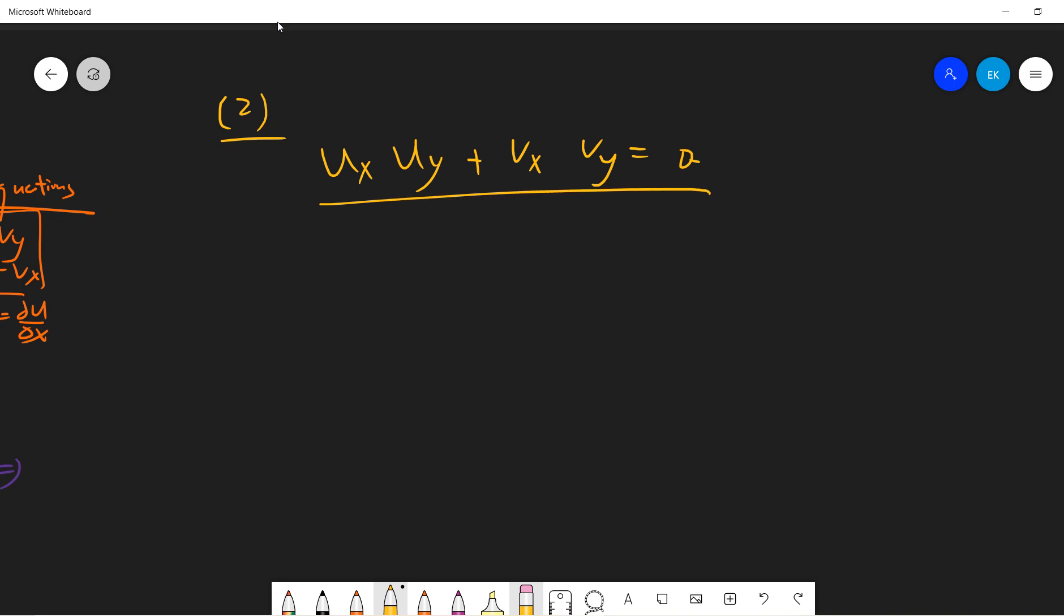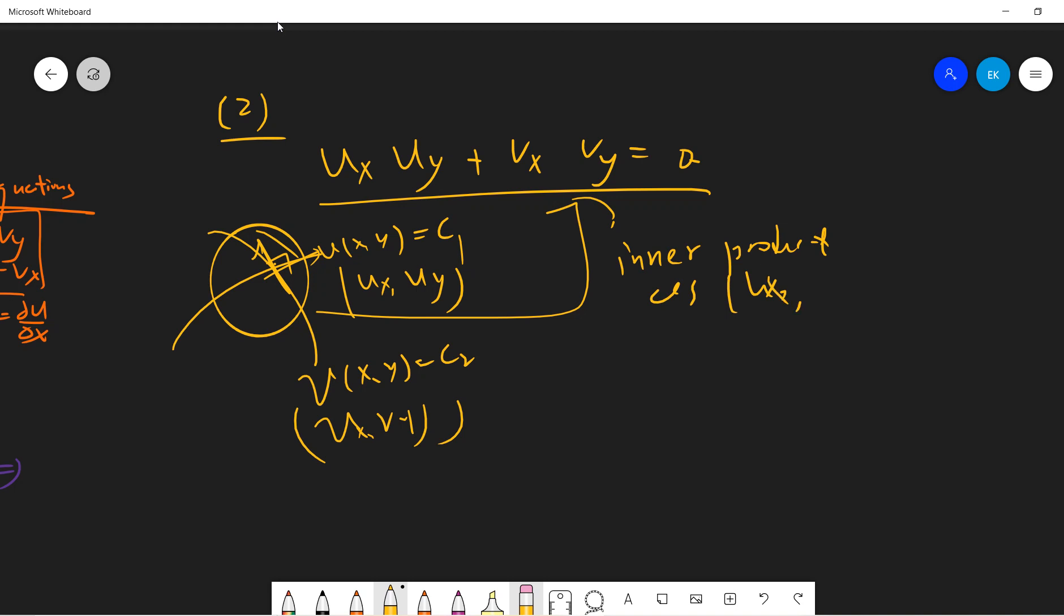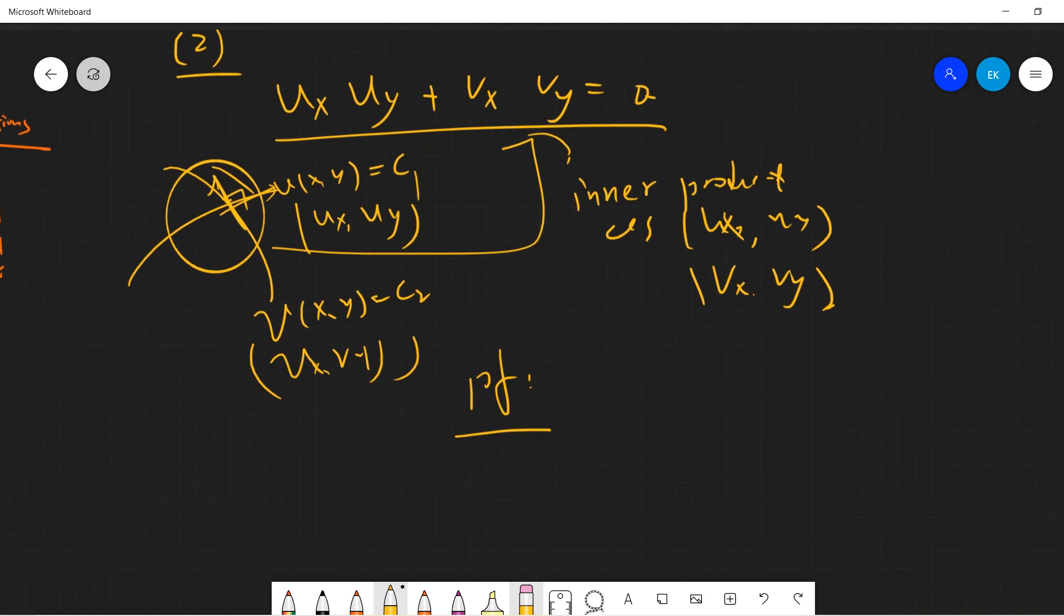This is orthogonality. You can view u equals constant and v equals constant as c1 and c2. Then ux, uy is the tangent vector of one and vx, vy is another vector, and they will be orthogonal. This can be viewed as an inner product of ux, uy with vx, vy.